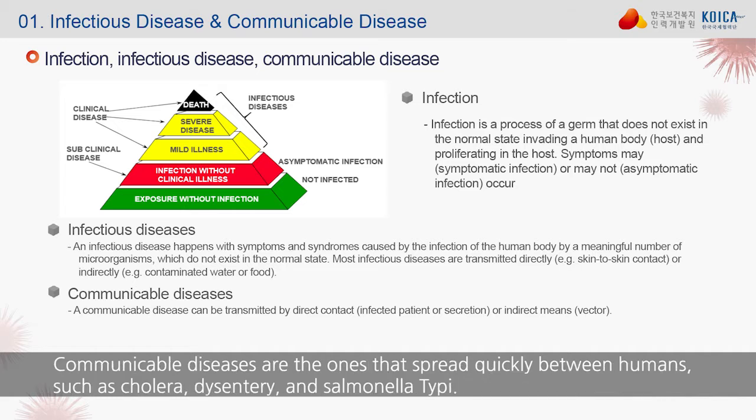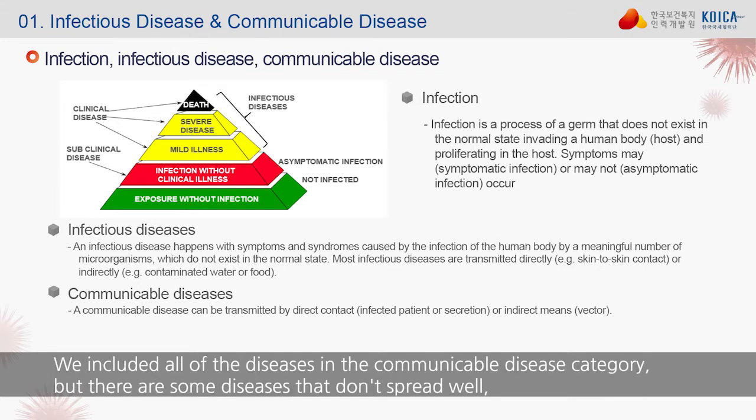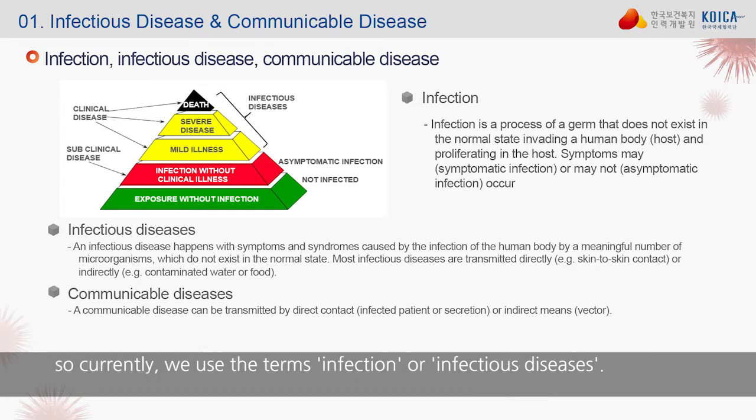Communicable diseases are the ones that spread quickly between humans, such as cholera, dysentery, and Salmonella typhi. Some don't spread quickly between humans, like tetanus by toxin or staphylococcus. We included all of these diseases in the communicable disease category, but since some diseases don't spread well, we currently use the terms infection or infectious diseases instead.